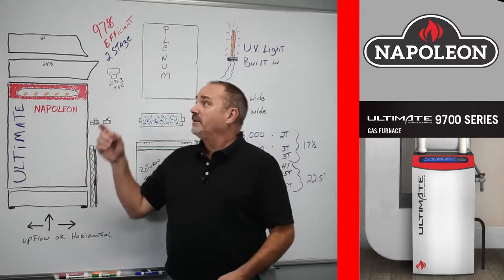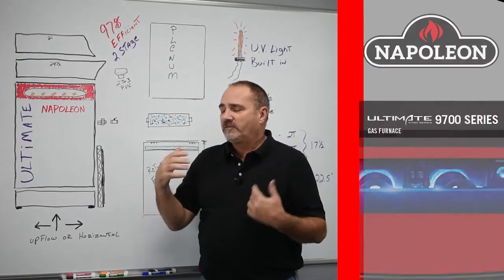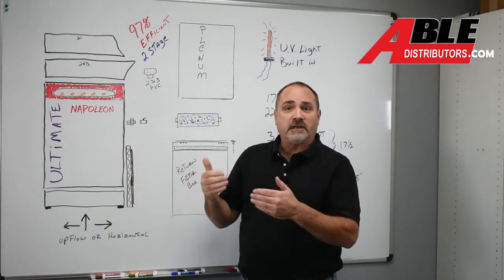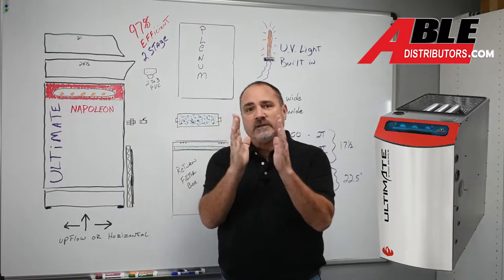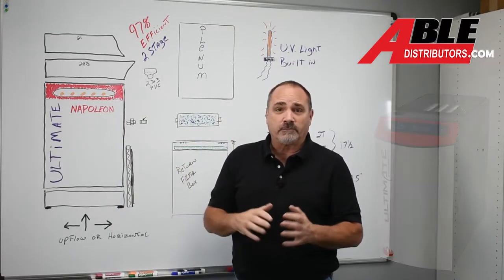Today I'm talking about the Napoleon 97% two-stage furnace. They call it the ultimate, and it really is. Stainless steel primary, stainless steel secondary. A stainless steel door that's double insulated makes it one of the quietest furnaces on the market by far.